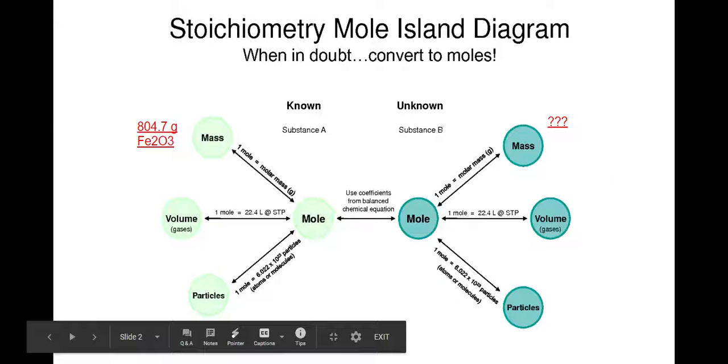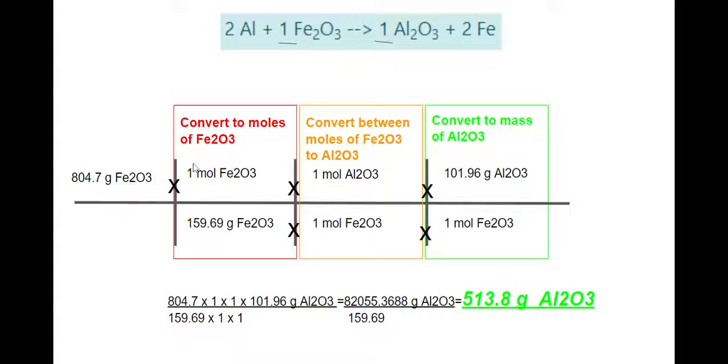But let's show you how the actual calculations work. So, you have your given 804.70 grams of Fe2O3. And first, you need to convert that into moles of Fe2O3. That's the first thing you should do. Always go into moles. So, the molar mass of iron III oxide is 159.69 grams. So, you will convert into that. One mole Fe2O3 is 159.69 grams Fe2O3, that's converting to moles.